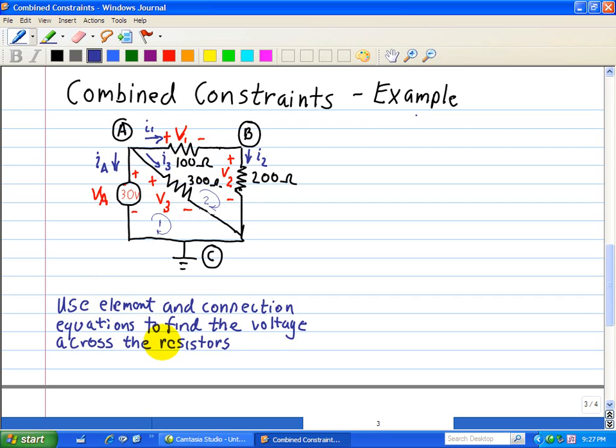So let's start off with the element constraint, which is Ohm's Law. So we have V1, V2, and V3, as well as VA.